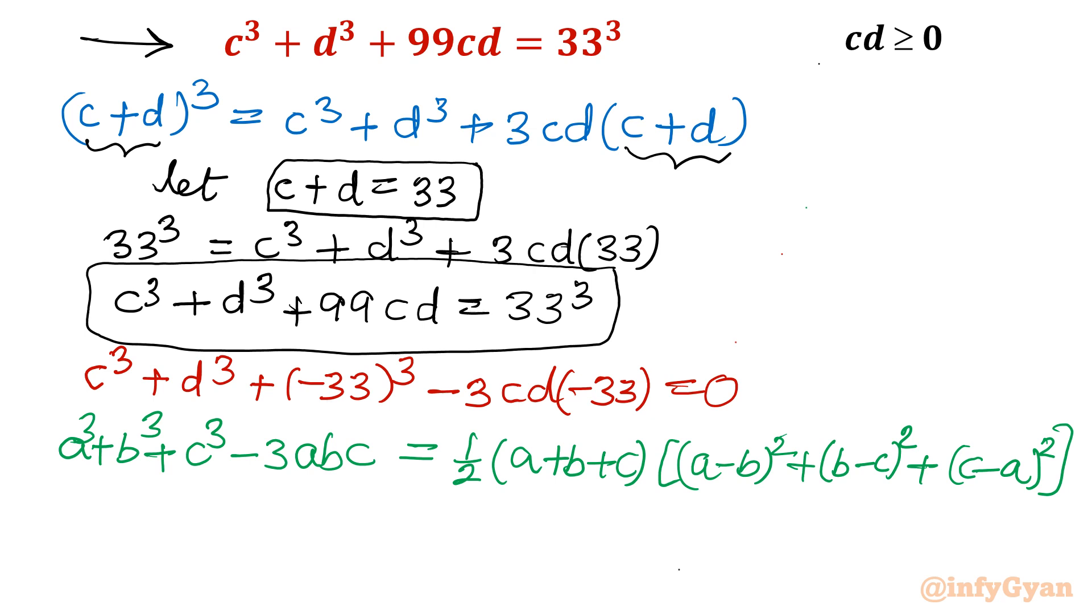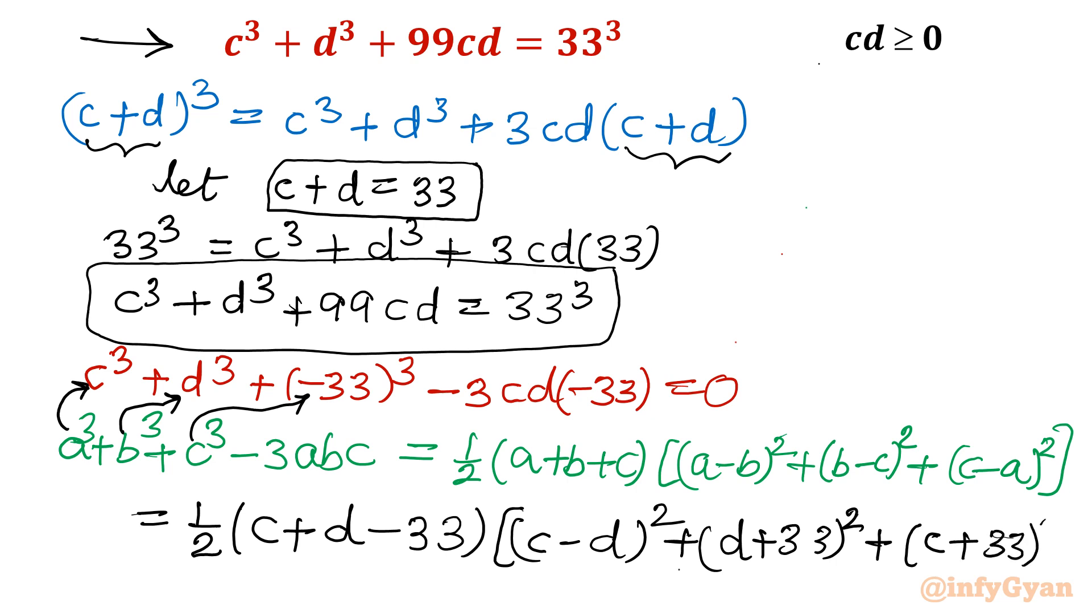So let me write this. Left hand side it is already framed. You can see in place of A it is C written. In place of B it is D written. In place of this C we have minus 33. So I will write my right hand side directly. It would be equal to half (C + D - 33). This bracket is done. Now come to the second bracket, (C - D)². C is minus 33. So I will write D minus, so minus of minus becomes plus, D plus 33 whole square. And last bracket I will write (C + 33)².